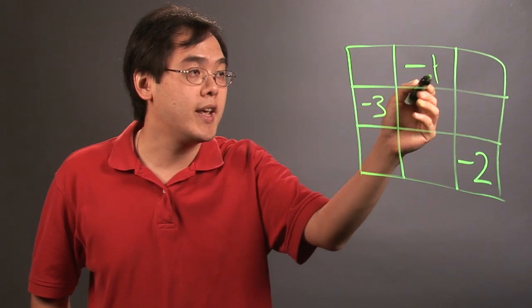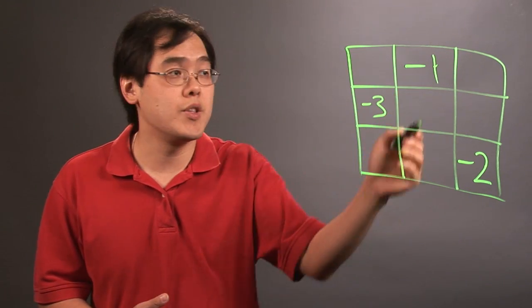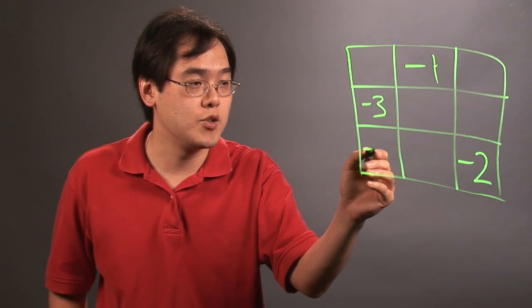Now if you go from here to here, you are going to be in a situation where the number is already occupied. So whenever that happens, you drop down 1. So this will be negative 4.